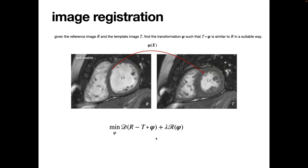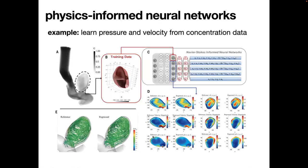We tackle this problem by solving an image registration problem. We set the end-diastolic image, where the heart is largest, as the reference image, and any other frame in the cardiac cycle as the template image. The image registration problem is to find a deformation mapping such that composing it with the template image gives an image close to the reference. Mathematically, this is a minimization of a distance function, which is ill-posed and always requires regularization.